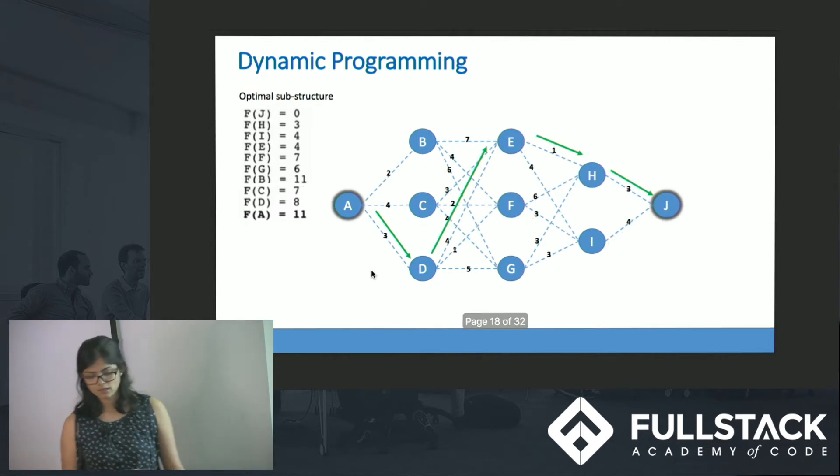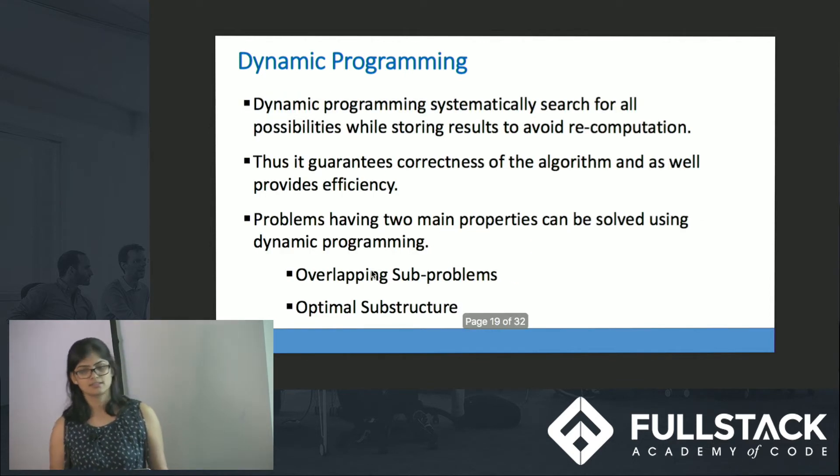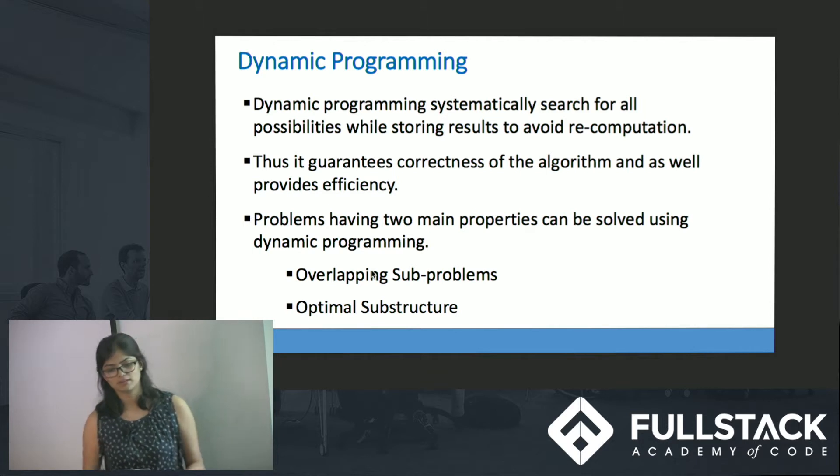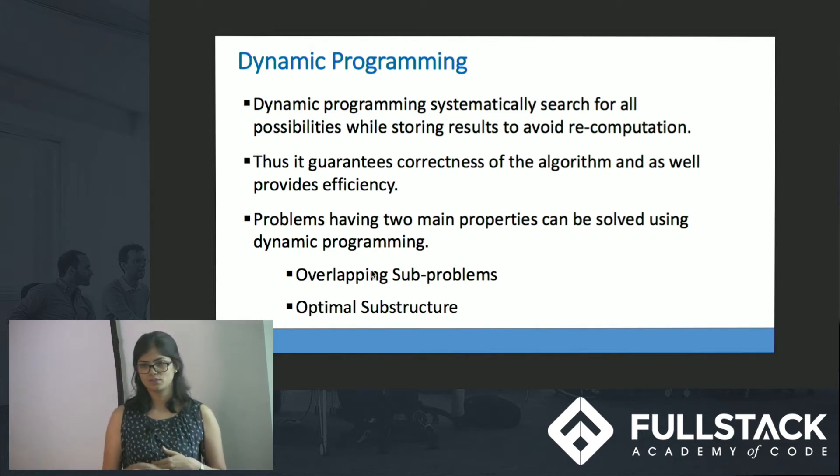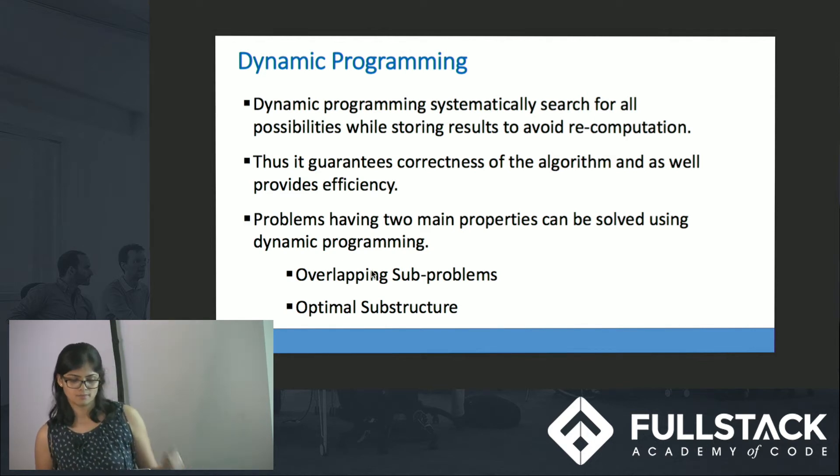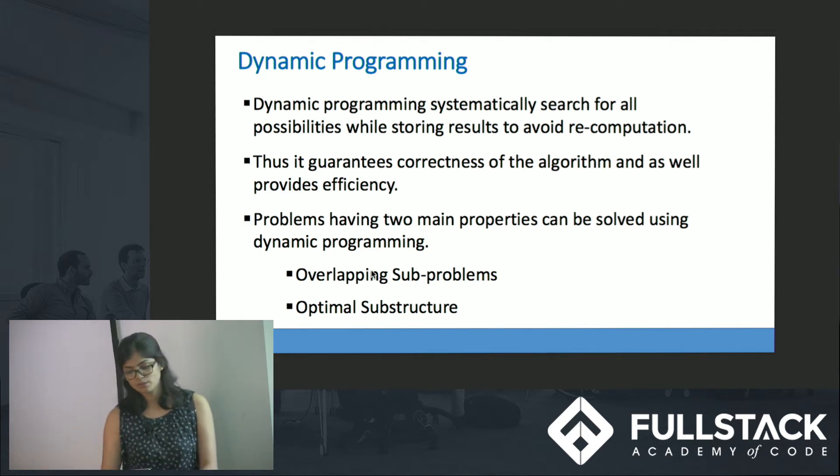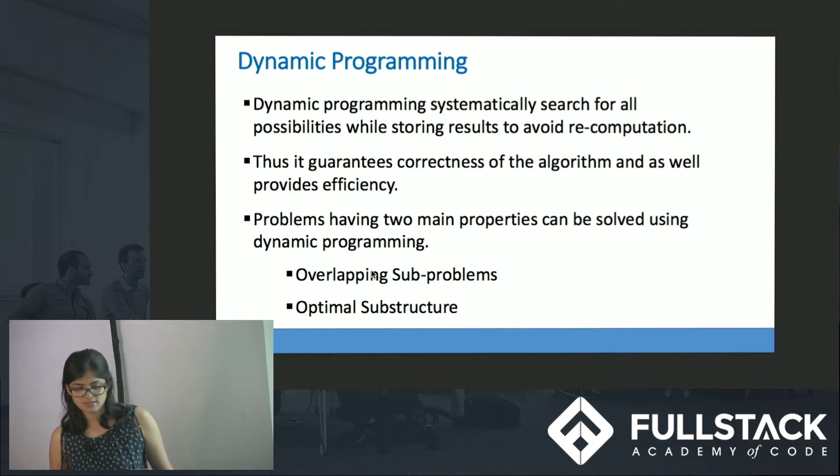Greedy algorithm fails in certain cases but dynamic algorithm systematically searches for all the possibilities and finds an optimal path, thus guaranteeing the correctness. We even saw that it was using the previously computed values so thus it has good efficiency. Problems which have two properties, one is overlapping sub-problems and the other is optimal substructure, fall under dynamic programming.